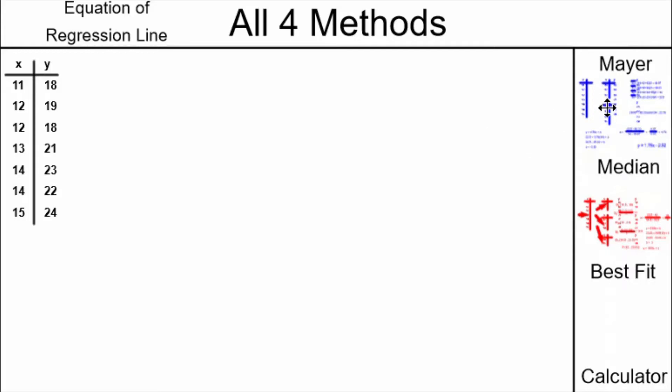We've already done the Meyer Line method, which is shown here in blue, and the Median Median method, which is shown here in red. They're shrunk down small to make room, but we can expand them later when we need to look at them again. Now we're doing the Line of Best Fit method.